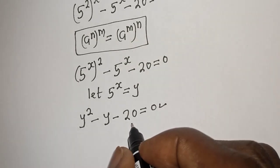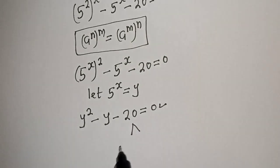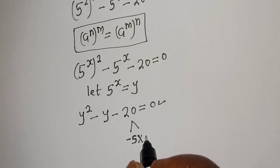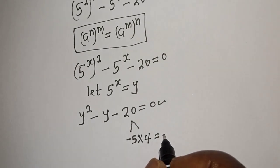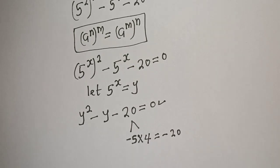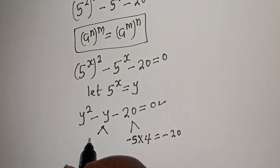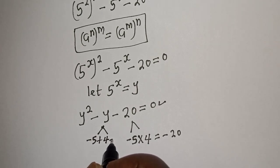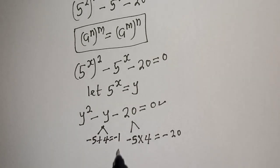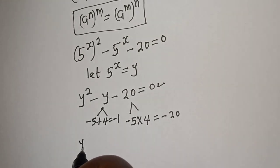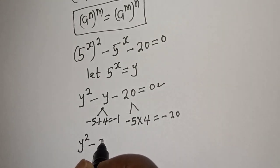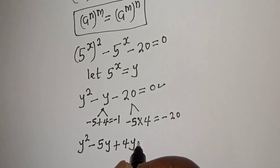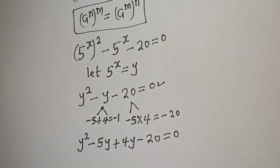Product is negative 5 times 4, which equals negative 20. Sum is negative 5 plus 4, which equals negative 1. So we rewrite: y squared minus 5y plus 4y minus 20 is equal to zero.